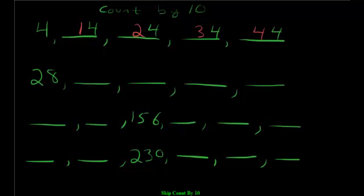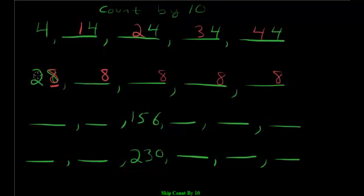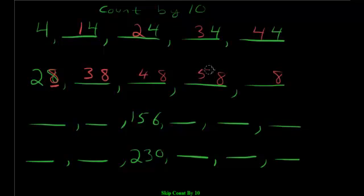Example 2: start at 28 and skip count by 10. The last digit — the 8 — never changes, so I write 8 on all of them. Then the number in front changes. Since we start with 2 in front, we're going to write 3, then 4, 5, and 6. So the sequence continues: 28, 38, 48, 58, 68.